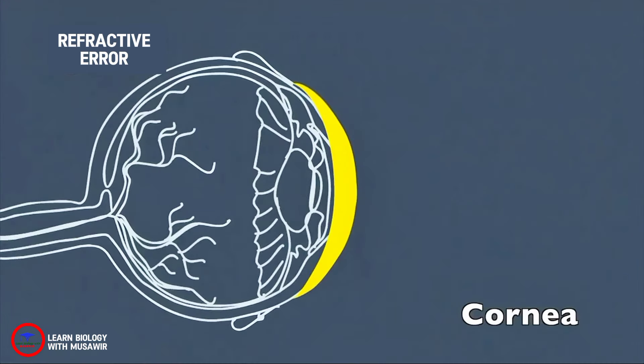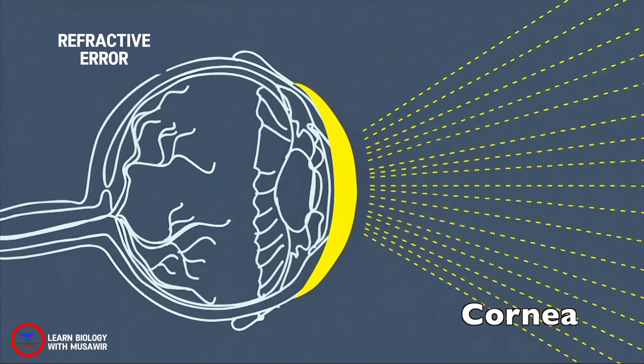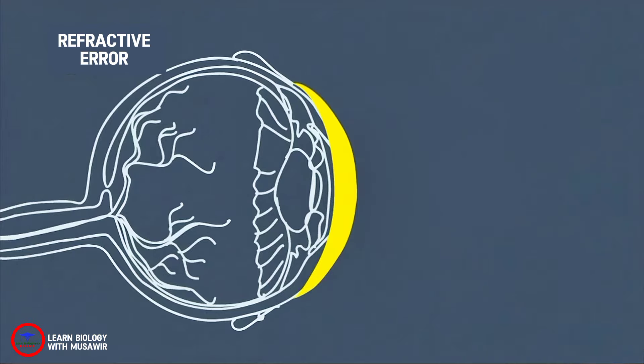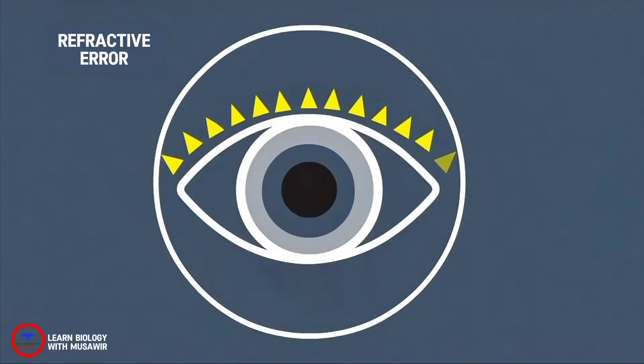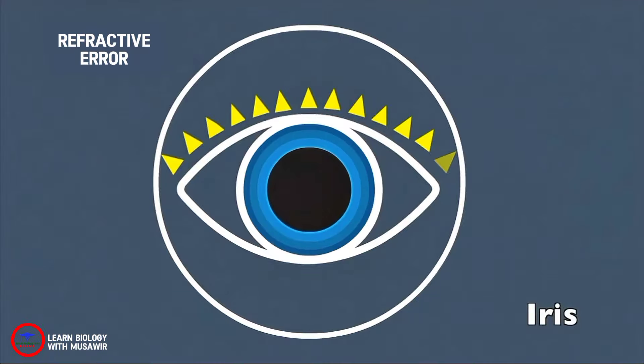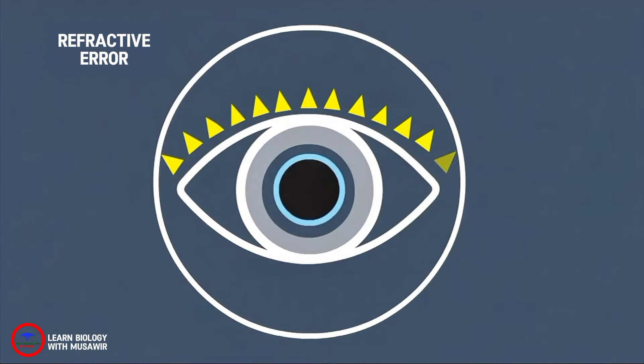The cornea is a transparent dome-shaped tissue covering the front of the eye. It bends and focuses light as it passes through. The pupil is a dark opening in the center of the iris. It is like a window through which light enters the eye. The iris, or colored portion of the eye that surrounds the pupil, expands and contracts, making the pupil bigger or smaller to let the right amount of light enter the eye.